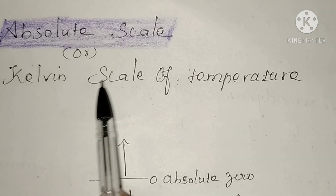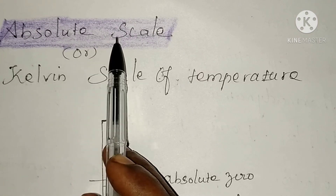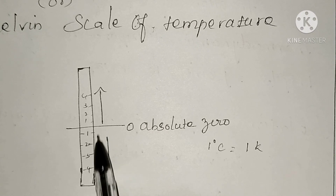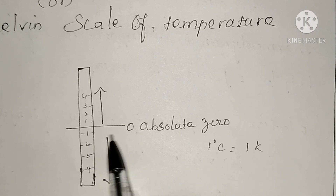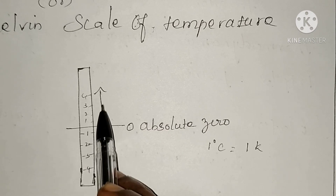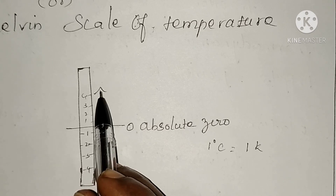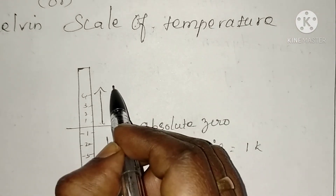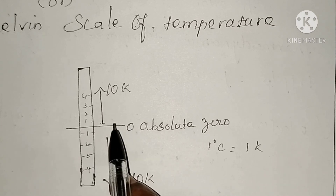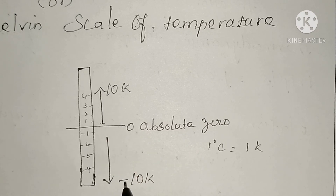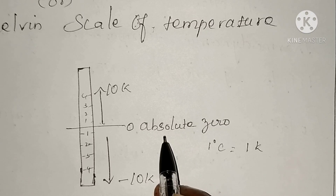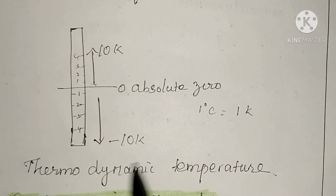Next we are going to learn the absolute scale, or Kelvin scale, of temperature. The absolute scale is also known as the Kelvin scale, and it is also called the thermodynamic temperature. From absolute zero we can measure positive and negative temperatures — for example, plus 10 Kelvin or minus 10 Kelvin. One degree Celsius is equal to 1 Kelvin.